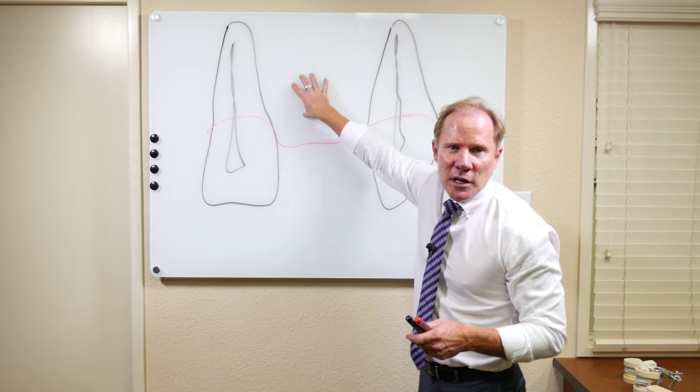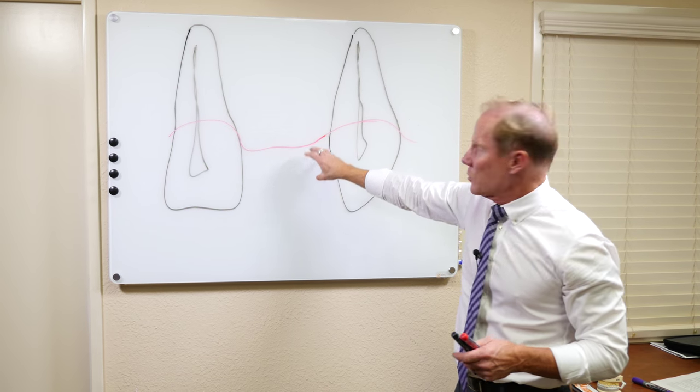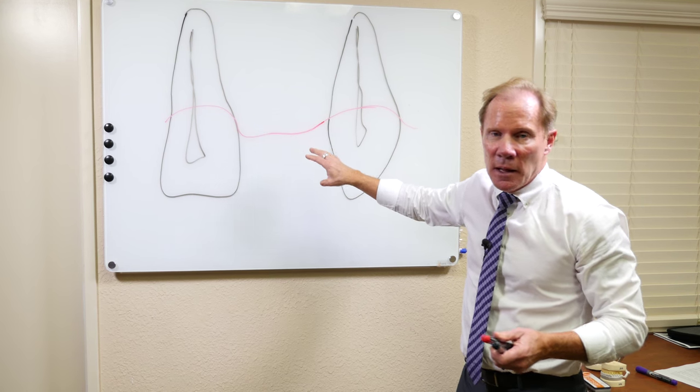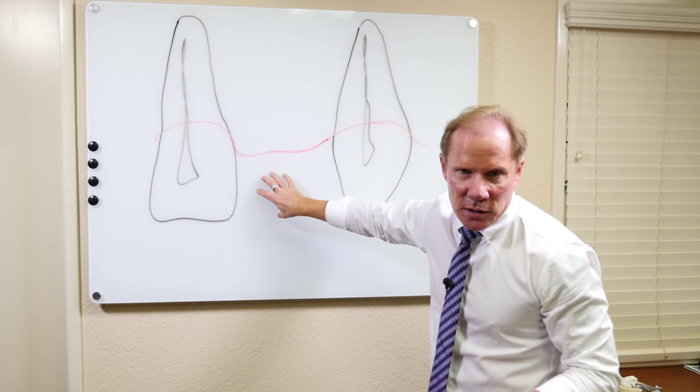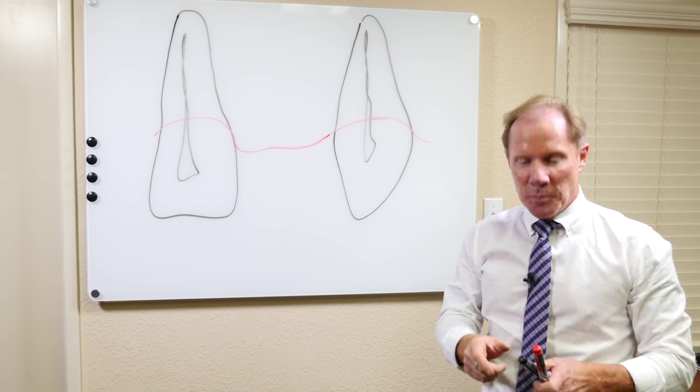Imagine we have two teeth and for some reason we lost this tooth in the middle, whether it be gum disease, whether it be decay or even trauma. We could do a bridge between these teeth, but really in most situations an implant is the best option.